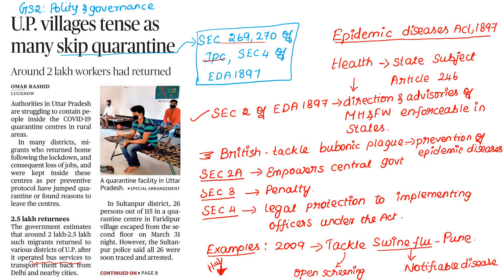This links to Section 4 of the Epidemic Diseases Act 1897. We all know Health is a State Subject. Article 246 mentions the State List, Centre List, and Concurrent List. Laws on the State List can be made by the state government. Health is a State Subject.